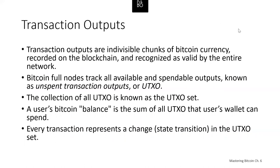The fundamental building block of a Bitcoin transaction is a transaction output. Transaction outputs are indivisible chunks of Bitcoin currency recorded on the blockchain and recognized as valid by the entire network. Bitcoin full nodes track all available and spendable outputs known as unspent transaction outputs or UTXOs. The collection of all UTXOs is known as the UTXO set and currently numbers in the millions. The UTXO set grows as new UTXOs are created and shrinks when UTXOs are consumed. Every transaction represents a change or state transition in the UTXO set.